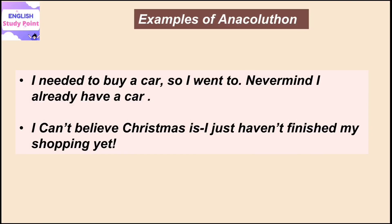Here are some examples of anacoluton. First: 'I needed to buy a car, so I went to — ki mujhe car leni thi isliye main bahar gaya — never mind, I already have a car.' Yahaan par ek point pe wo keh raha hai ki mujhe car leni thi isliye main bahar gaya, then wo keh raha hai ki kuch nahi, mere paas car already hai. Another example: 'I can't believe Christmas is — ki mujhe vishwaas nahi hota ki Christmas festival aane wala hai.'